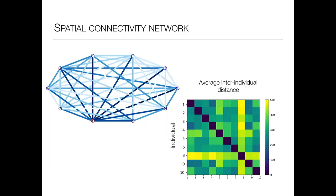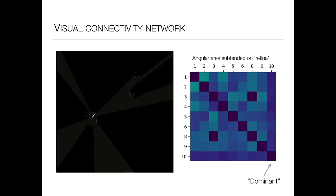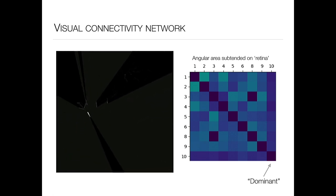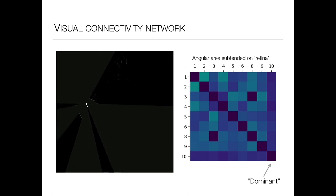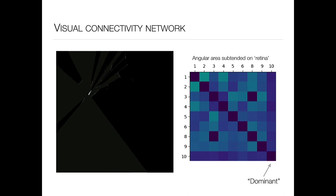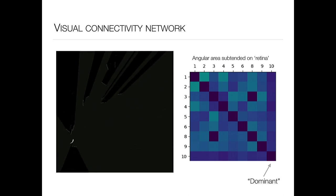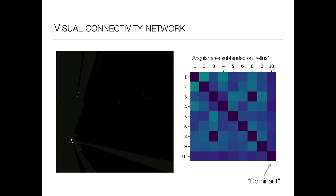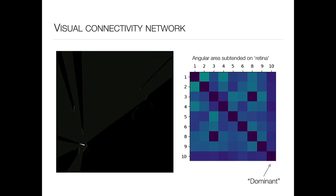A spatial connectivity network shows that the average inter-individual distance between the dominant male and all other individuals in the group is far greater — although behaviorally better connected, spatially it's very poorly connected. If we also look at a visual connectivity network — how much each fish can see of each other fish — we see that the dominant male is very poorly connected as well. Not only are other fish further away from this individual, but they're seeing it less, so there's far less opportunity for visual information to encode a behavioral change.